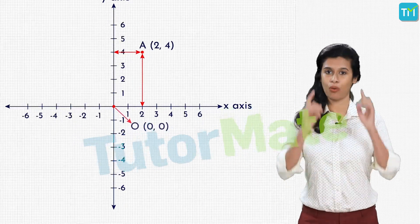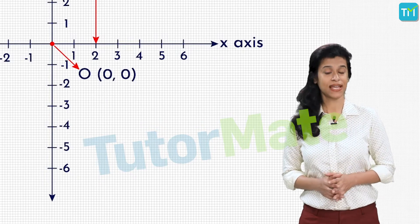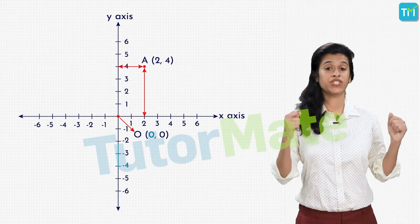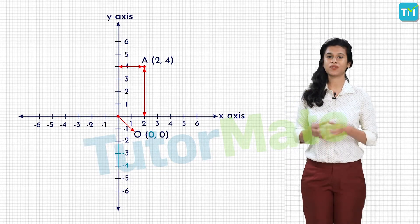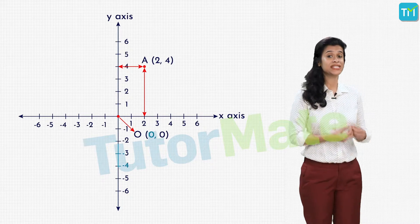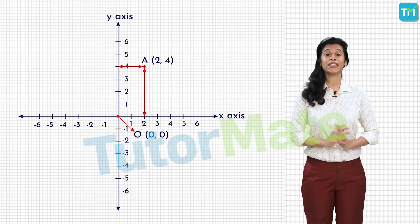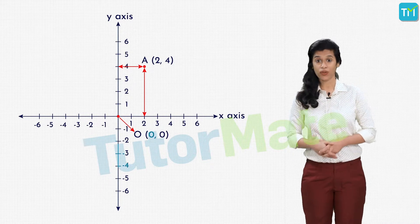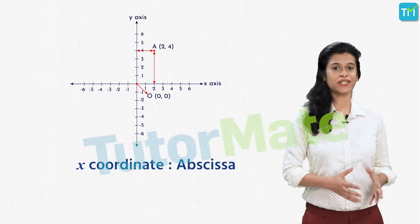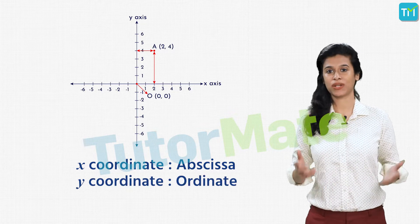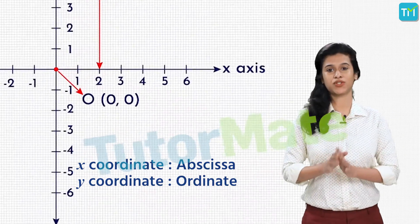Now if you look at the origin O — O is located on the x-axis, so it is at zero distance from the x-axis, and it is also on the y-axis, meaning it is at zero distance from the y-axis as well. Since the x-coordinate equals distance from the y-axis and the y-coordinate equals distance from the x-axis, both coordinates of the origin are zero — O is represented as (0, 0). Also, the x-coordinate of a point is known as its abscissa, while the y-coordinate is known as the ordinate. For the origin, both the abscissa and ordinate are equal to zero.